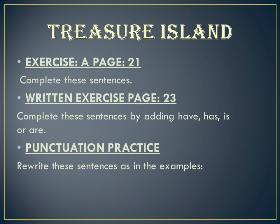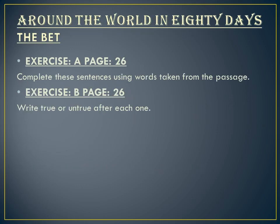Moving towards our next chapter, 'Treasure Island' — this is a detailed story about a treasure island, pirates, and sea robbers. We have done Exercise A of page number 21 where you will complete the sentences. There is also a written exercise on page number 23 to complete sentences by adding 'have,' 'has,' 'is,' and 'are.' Another exercise is punctuation practice where you rewrite sentences using apostrophes as shown in the examples.